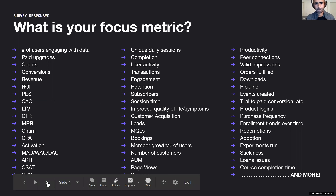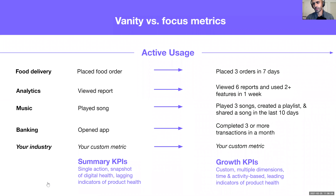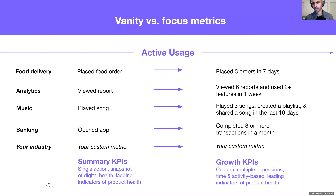You've probably heard of vanity versus focus metrics. In 2008 when I launched my first company, I tried to raise funding and people told me I needed to get 100,000 downloads. Today that doesn't necessarily mean anything — most investors ask how people are using your product. For a food delivery app, it's not just how many orders placed, but adding a time interval. For example, how would you expect your users to use your product? A good user would probably place three orders in seven days. There's no right or wrong — it's something you need to think about honestly.